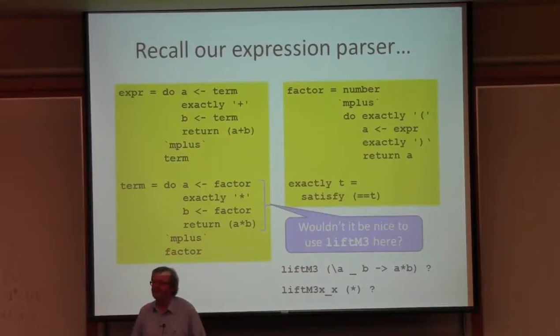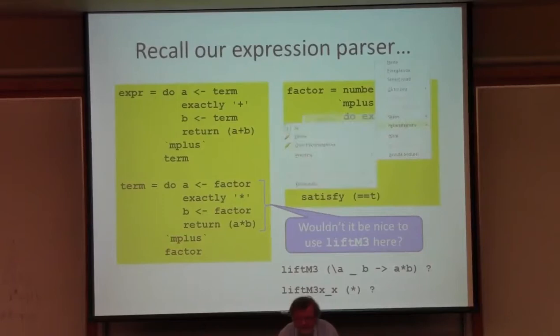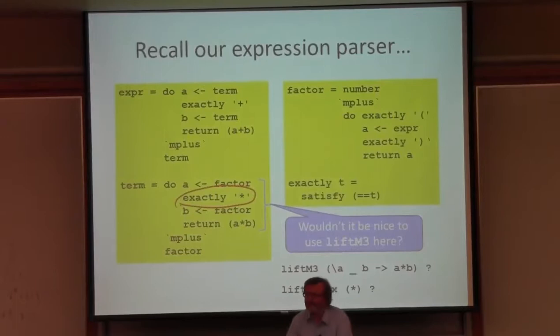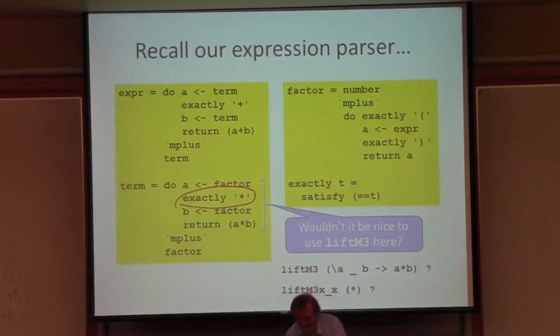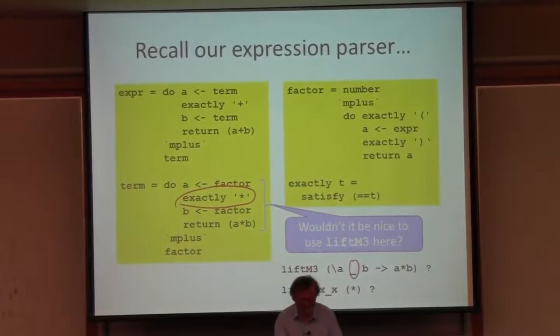What is that second argument? Up here in the term definition, it's that exactly star — that's a monadic computation that produces a value, actually just the star character, but I have to throw that away somewhere. So I can do this, of course. But now I have to have a variant on liftM3. How many variants am I going to need? Well, eight I suppose — sixteen variants of liftM4. It's not nice.